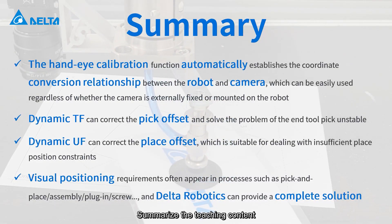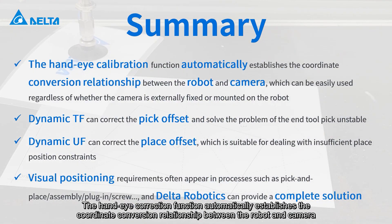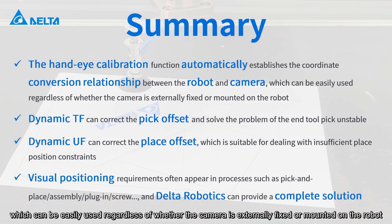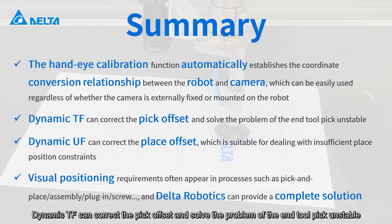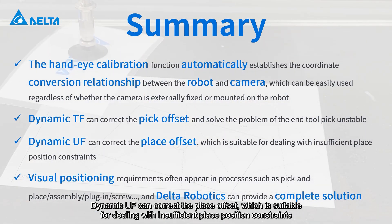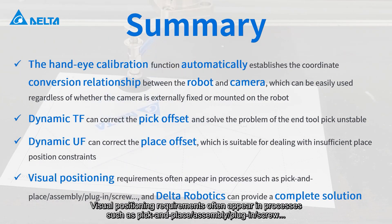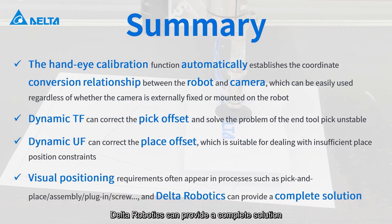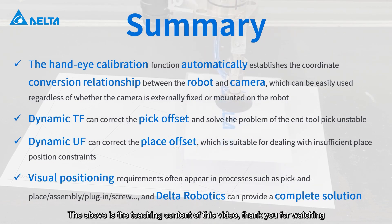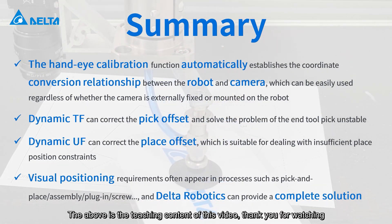To summarize the teaching content: the hand-eye calibration function automatically establishes the coordinate conversion relationship between the robot and camera, which can be easily used whether the camera is externally fixed or mounted on the robot. Dynamic TF can correct the pick offset and solve the problem of unstable end-tool picking. Dynamic UF can correct the place offset, which is suitable for dealing with insufficient place position constraints. Visual positioning requirements often appear in processes such as pick and place, assembly, plug-in, and screw operations — Delta Robotics can provide a complete solution. That concludes the teaching content of this video.